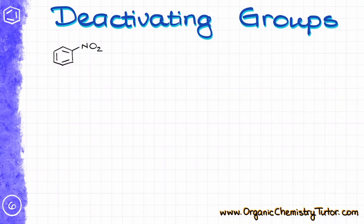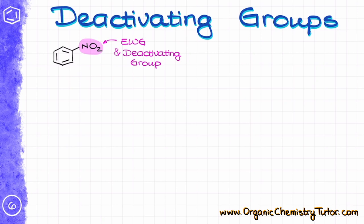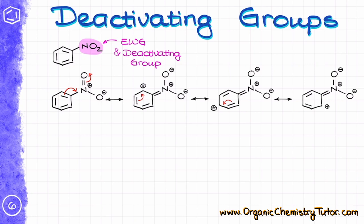If there are activating groups, there must also be deactivating groups — and yes, you would be absolutely correct. Let's look at this example. The nitro group is a typical electron-withdrawing group, or EWG, and because of that it is a deactivating group. Let's do a similar analysis to what we did for the methoxy group in anisole. We'll draw the resonance structures for nitrobenzene itself and see how electron density is distributed throughout the molecule. In resonance, we typically move electron density either towards an electronegative element like oxygen, or towards the positive charge on the nitrogen.